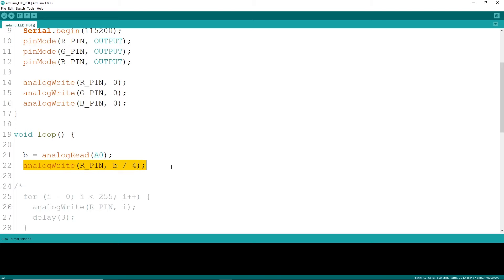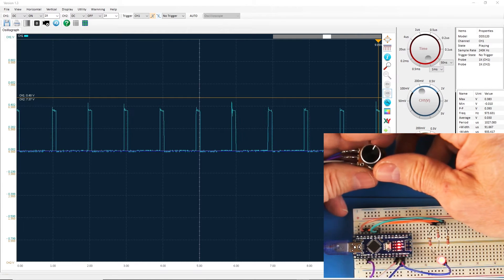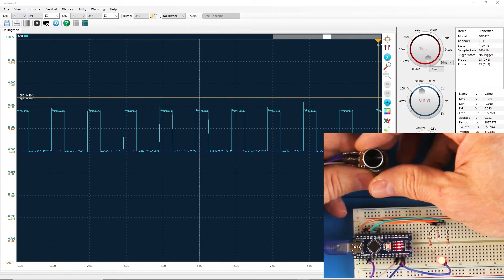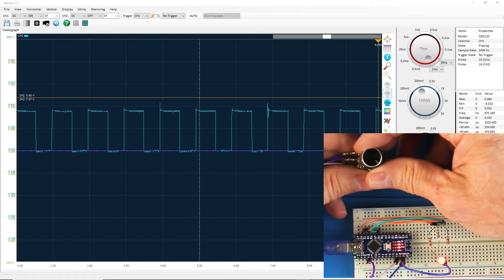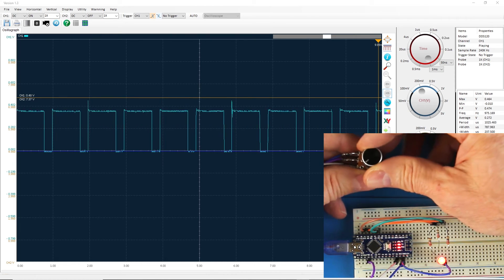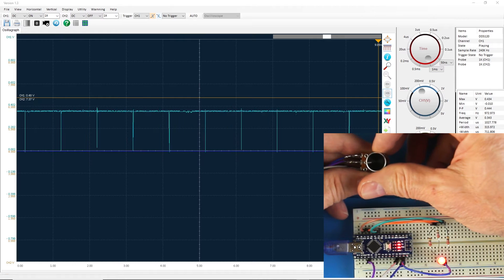Upload the code and monitor the pin with an oscilloscope. Notice how the output is a square wave with a constant cycle. As we vary the signal from the pot, notice how the percentage on is changing.